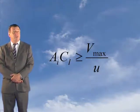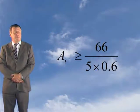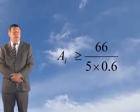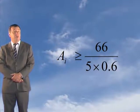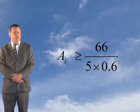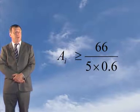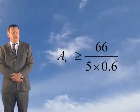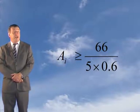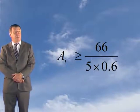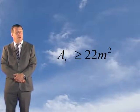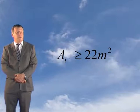Putting our figures into the equation gives us the results shown here. AI must be greater than or equal to 66 divided by 5 multiplied by 0.6, and if we evaluate that, we get AI has to be greater than or equal to 22 square metres.